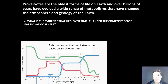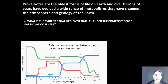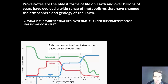Now let's look at a bigger picture. We're trying to use our understanding of prokaryotes and how they've evolved over time to understand how living organisms have changed the actual atmosphere of the planet. In this graph, we can see that carbon dioxide levels have dropped over billions of years — from four and a half billion years ago to the present — while oxygen levels have gone up.